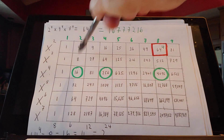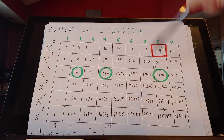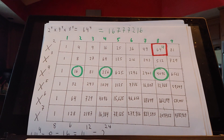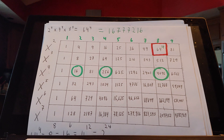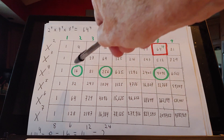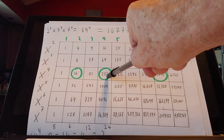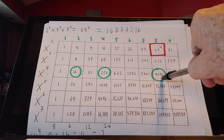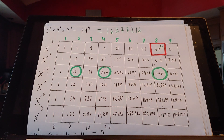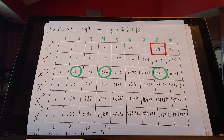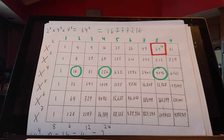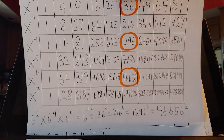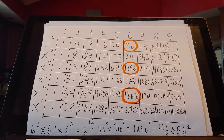Here we have 2 to the 4th times 4 to the 4th times 8 to the 4th, and we can multiply those with each other algebraically. It's very easy: 2 to the 4th times 4 to the 4th times 8 to the 4th is 64 to the 4th. But 64 to the 4th is also 8 to the 8th, 16 to the 6th, 4 to the 12th, 2 to the 24th. And if we were looking for ways to get any of those numbers to match up, we would have found it just using that very method.